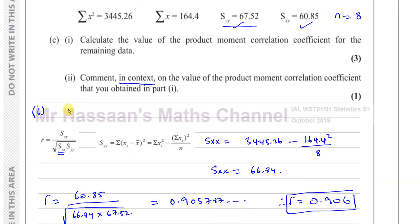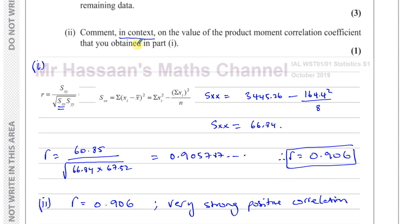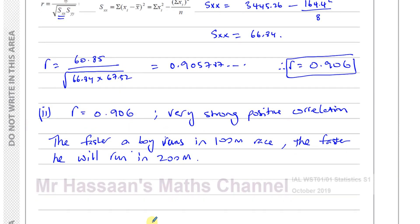So we can mention something that mentions this. So we can say as the time for the 100 meters race, let me put it another way. The faster a boy runs in the 100 meter race, the faster he will run in the 200 meter race. That's how we could explain that in context. Comment in context. So that's what this shows. Very strong positive correlation. So the faster somebody goes in the 100 meters, the faster they also run in the 200 meters. Something like that would be perfectly fine.